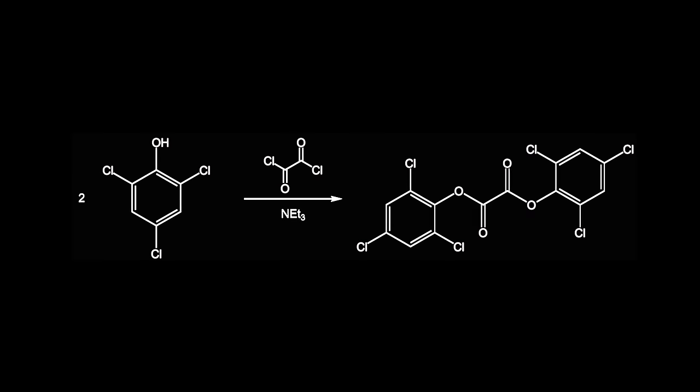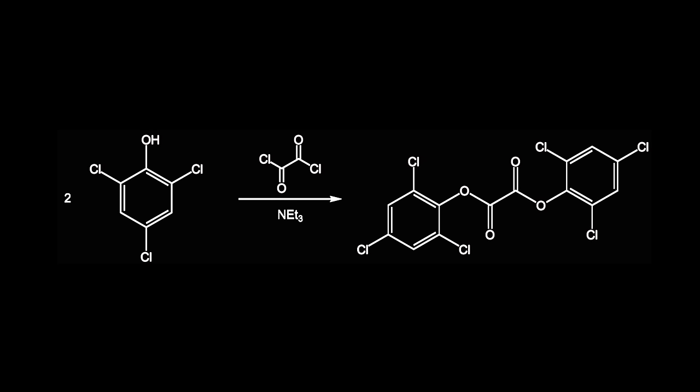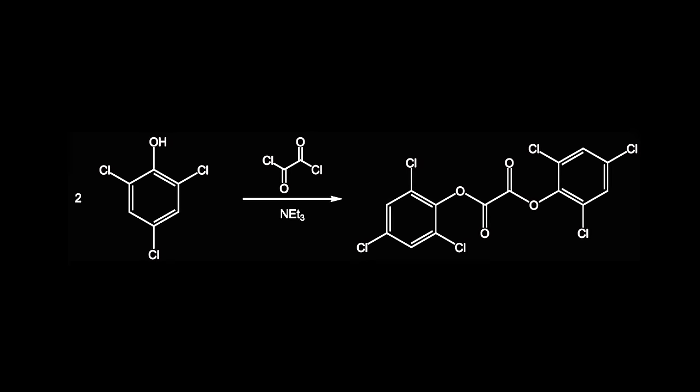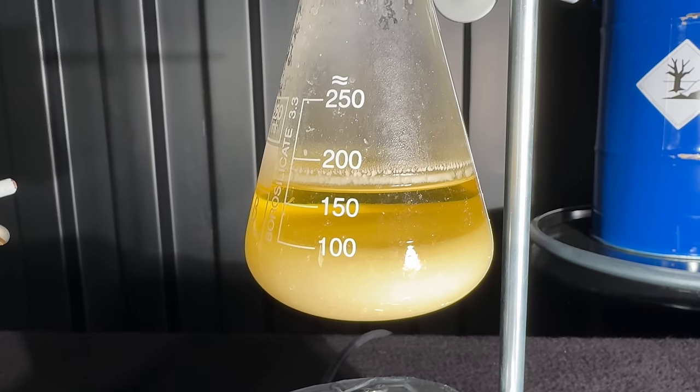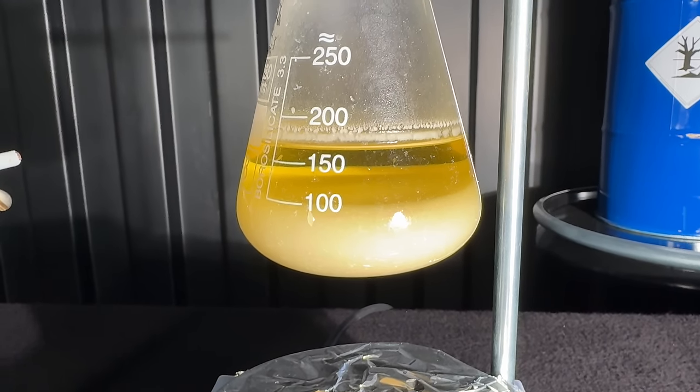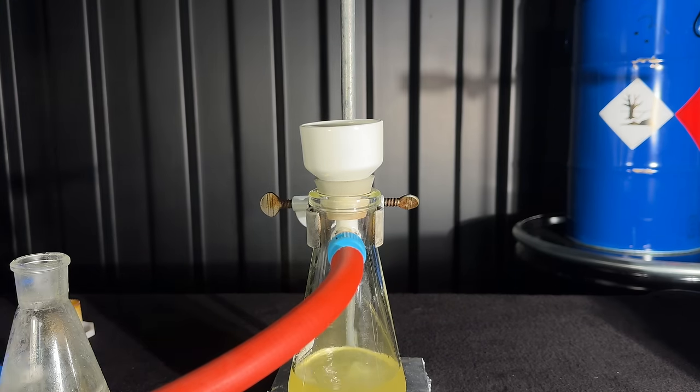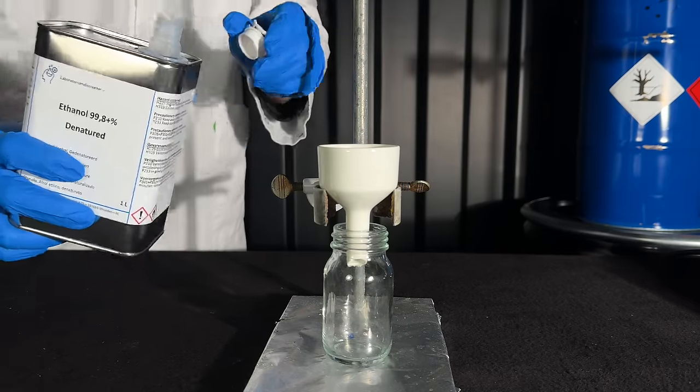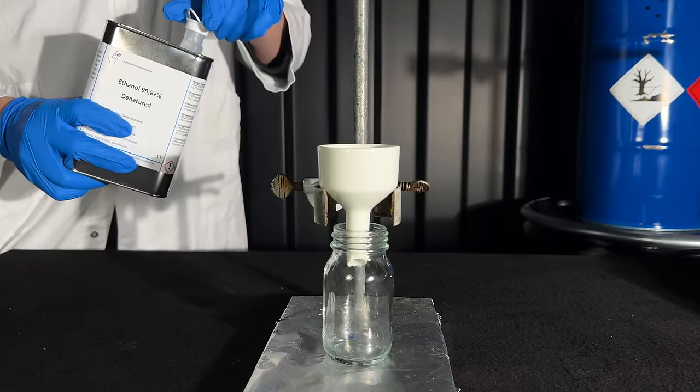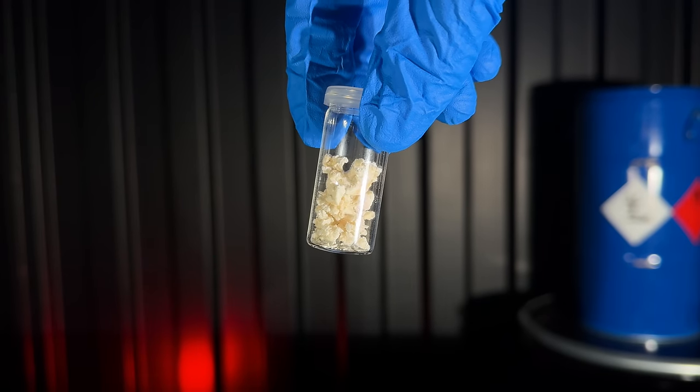The TCP reacts with oxalic chloride to form TCPO and hydrogen chloride. The HCl in return reacts with the triethylamine to form triethylammonium chloride. I let it stand until the next day, because this way you get bigger crystals that are easier to filter and then I filtered it. To get rid of the triethylammonium chloride I did two washes with ethanol. Once dry the yield was 2.17g, which is about 48%.